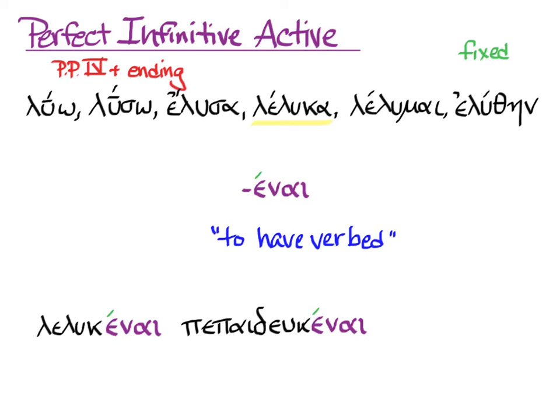The fourth principal part of γράφω, write, is γέγραφα. So without its alpha, the stem is γεγραφ. We add the ending with its accent, έναι. And we get γεγραφέναι, to have written.